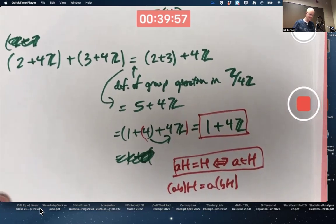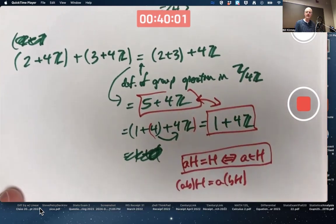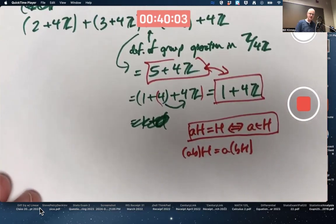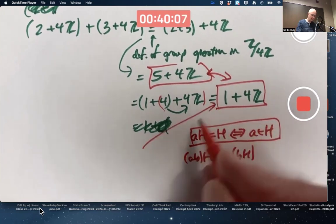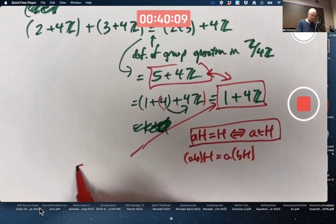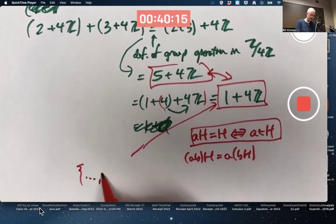Another way to think of this, to realize these are the same, is to think about what the elements of this thing are. The elements of 1 plus 4Z are all multiples of 4 plus 1.